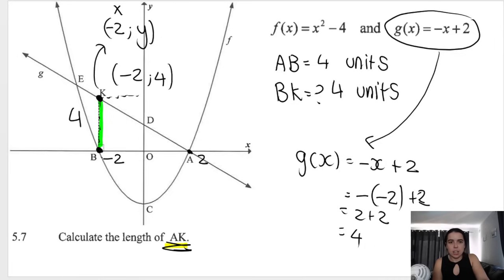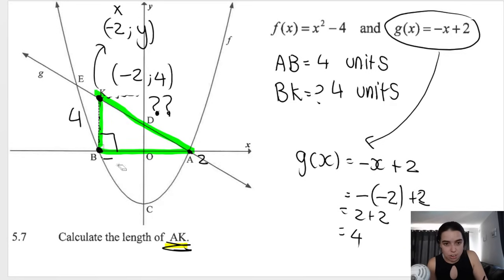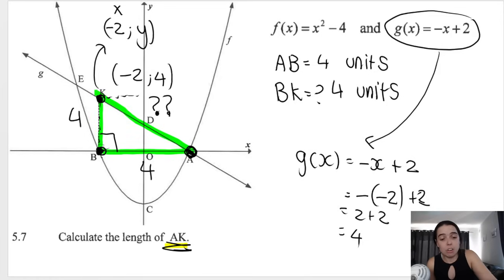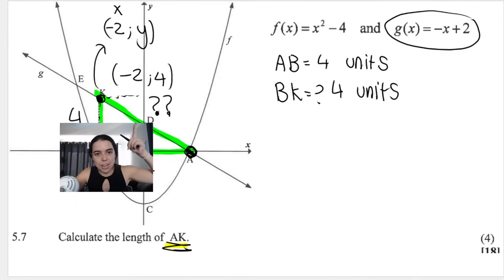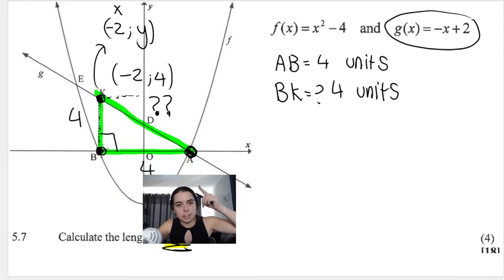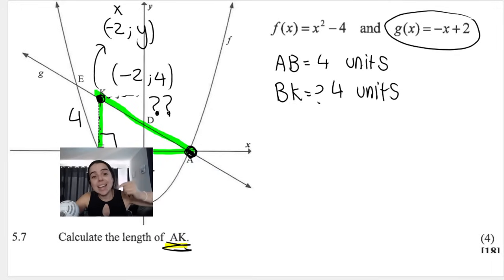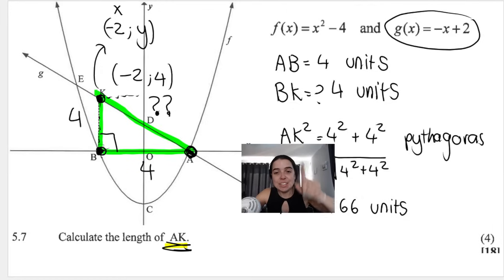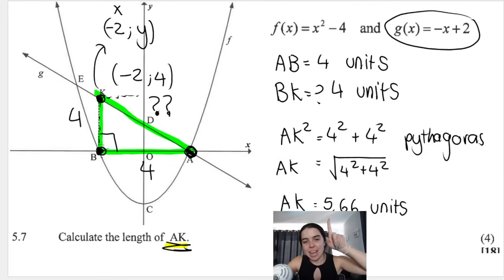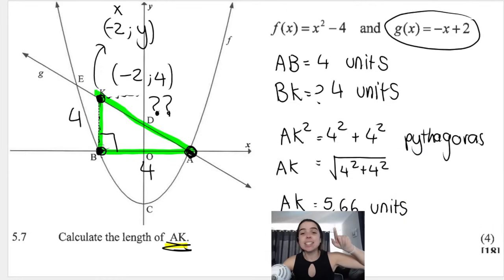Now we use Pythagoras to find AK, which is the hypotenuse. We have AB = 4 units and BK = 4 units. So AK² = 4² + 4² = 16 + 16 = 32, giving AK = √32 ≈ 5.66 units. Remember to write Pythagoras as your reason. They could also ask you to calculate the area of triangle BAK, so be aware of those types of questions in this section.